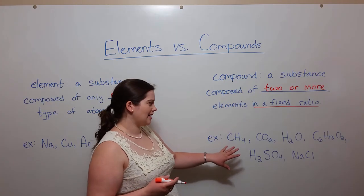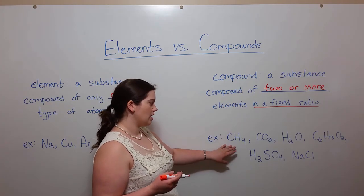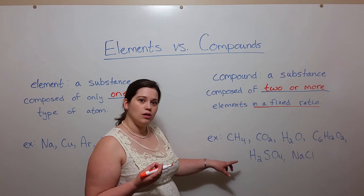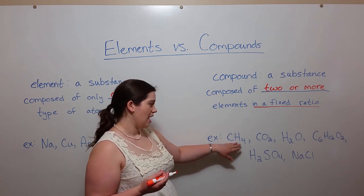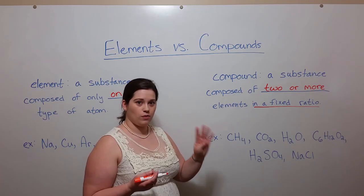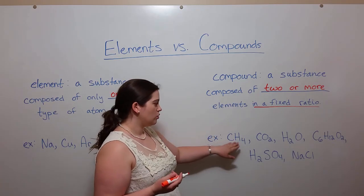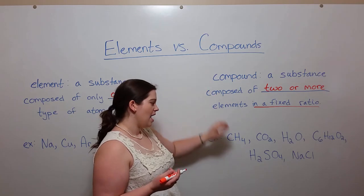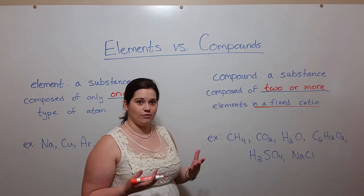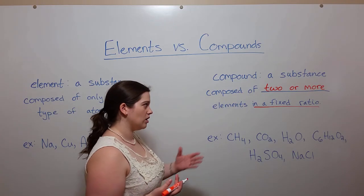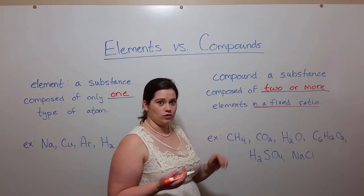It means that if we look at examples of compounds, every single compound of methane, CH4, has one carbon and four hydrogens. So there's two different elements there making it a compound, and you have the same number of carbons and hydrogens in every methane molecule. And that's what we mean by in a fixed ratio.